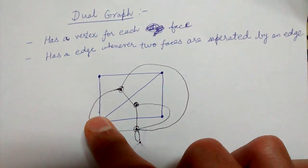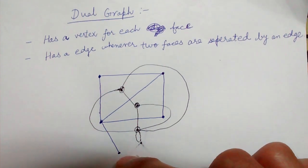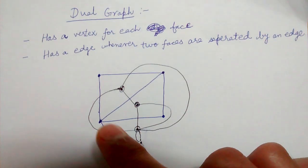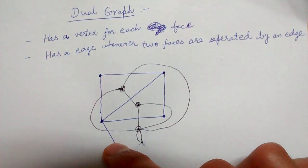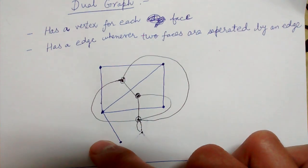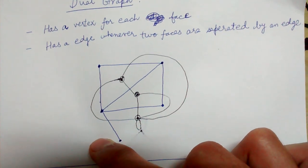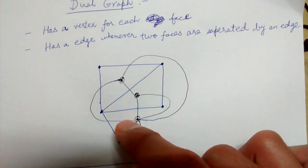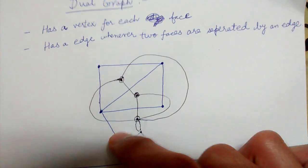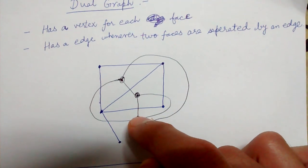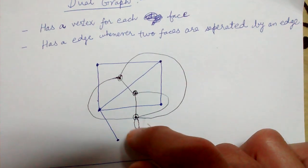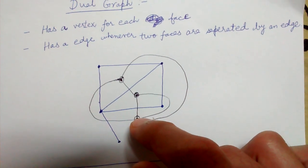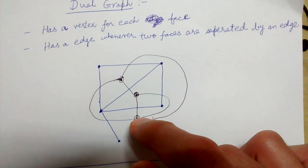And finally we see this edge. So this has the infinitely extending face on one side and on the other side also the infinitely extending face is there. So on both sides of this edge same face is there. So we draw a self loop on the vertex representing that face.